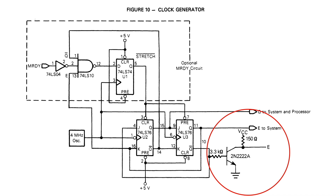I'm building the clock module with 74ACT parts, and I'm not sure that those can guarantee a 4.25 volt output in all circumstances. So at least initially, I'll be using this technique to drive the CPU clock as well, except that instead of a bipolar transistor, I'm going to use a small MOSFET.